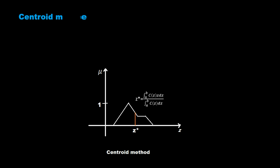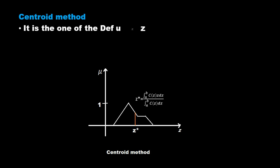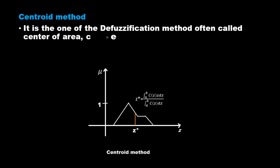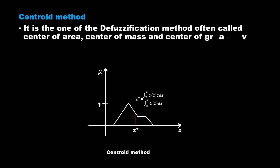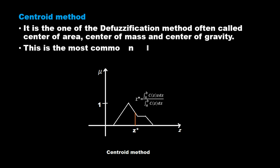The Centroid method is one of the defuzzification methods, often called center of area, center of mass, and center of gravity. This is the most commonly used method.